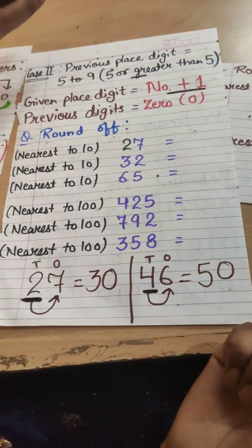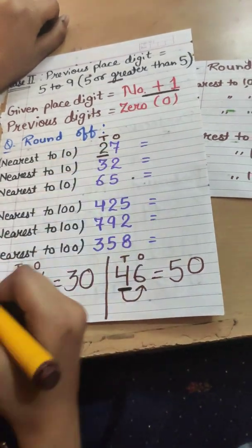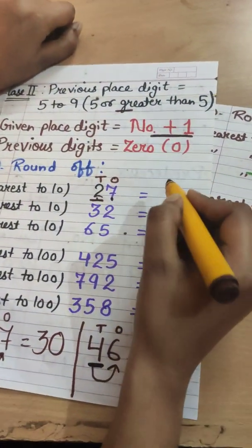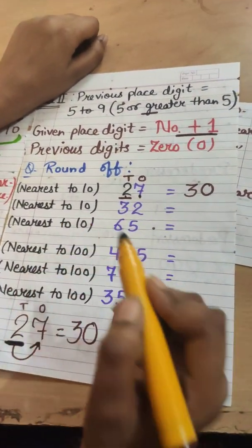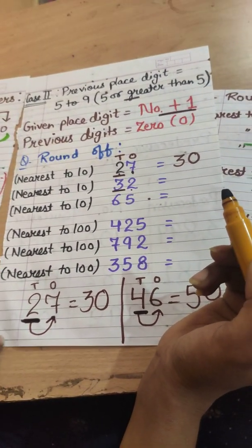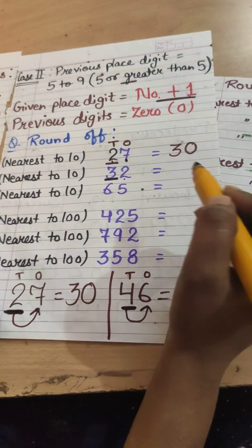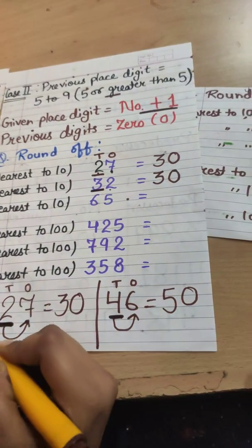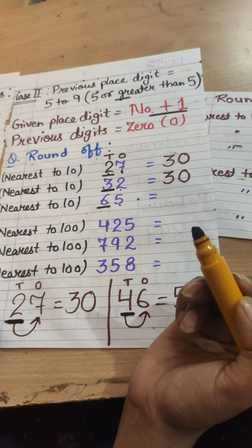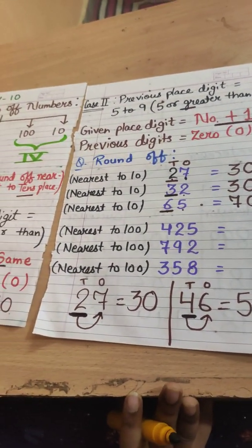Now let's solve some practice questions. Round off 27 to the nearest tens: tens place is 2, previous digit is 7 which is greater than 5, so the answer is 30. Round off 32 to the nearest tens: the previous digit is 2, which is smaller than 5, so the digit remains the same — answer is 30. Round off 65 to the nearest tens: previous digit is 5, which falls in the greater category, so 6 becomes 7 — answer is 70.